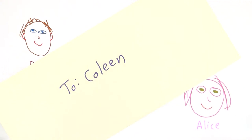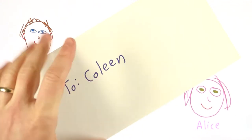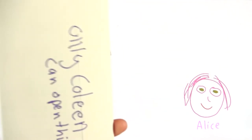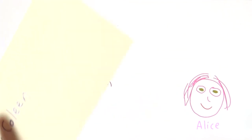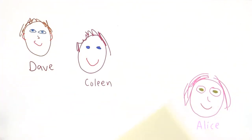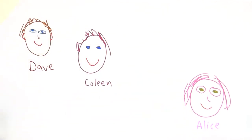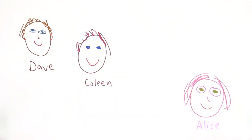If someone sees me giving a message to Colleen, well there's no problem there. Colleen would open the message and see that it's got a message to give to Alice, and then she could give the message to Alice. So this works a little bit — Colleen could open the message and give it to Alice.